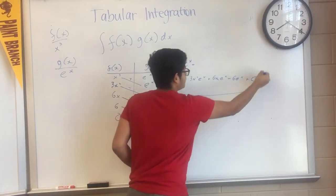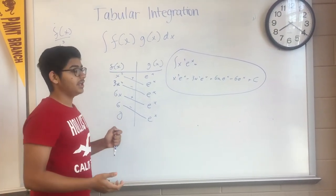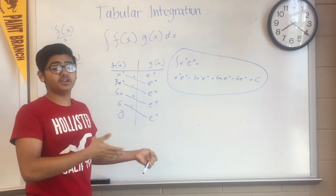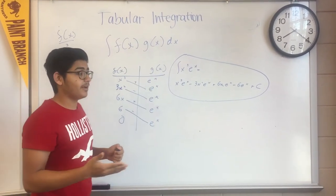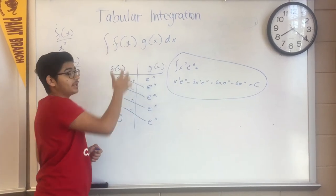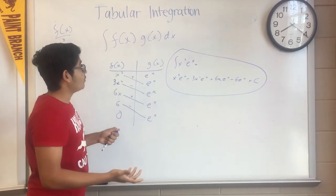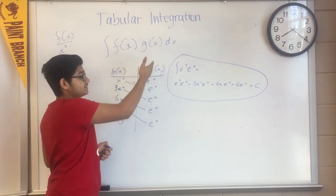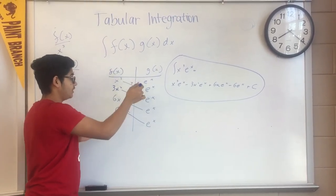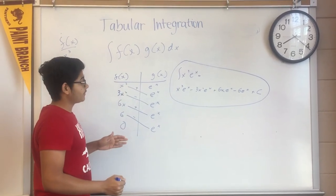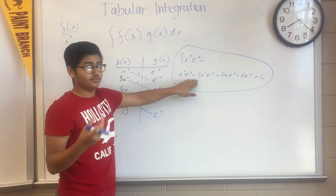Here you have it — tabular integration in use. We have learned that tabular integration is another way of doing integration by parts. We take two distinct functions f of x and g of x, find the one we can repeatedly differentiate to zero — in this case x cubed — and another that can be continuously integrated, such as e to the x. We then multiply diagonally in the t-chart using alternating signs to find the integral quickly and easily.